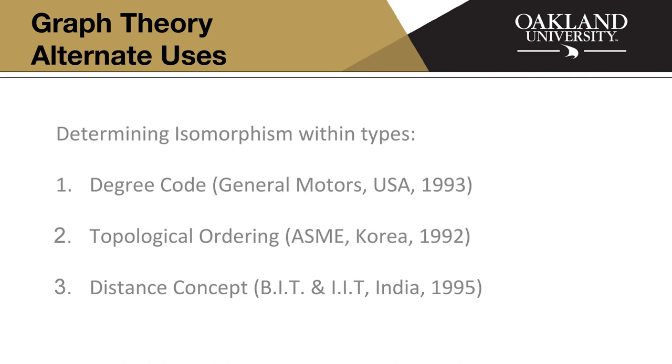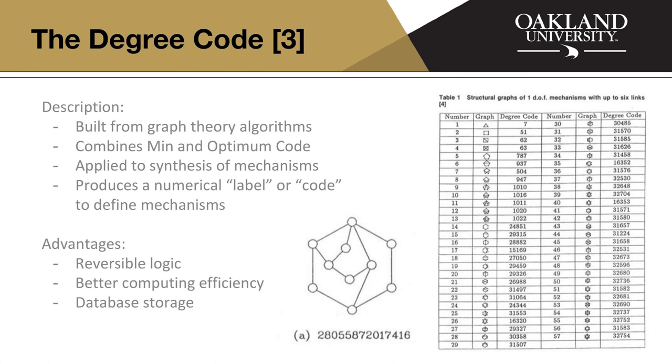So the first paper, they're actually concerned with kind of categorizing mechanisms. So there's minimum code and optimum code. And I didn't research too much on those, but they're kind of ways of finding how many mechanisms exist. But then what GM is concerned with here, they've identified a way to label, produce like a label or a serial number actually for a linkage. And then they're able to put it in like an archive and search through it. So each mechanism, each unique isomer, each unique mechanism has its own label. And it's very easy to find in like a catalog or like a database, right.